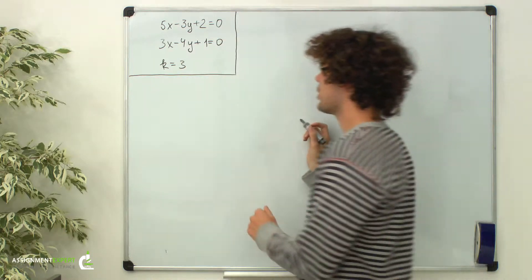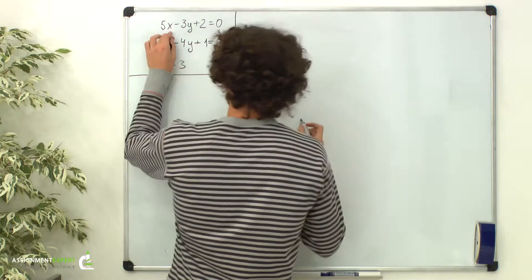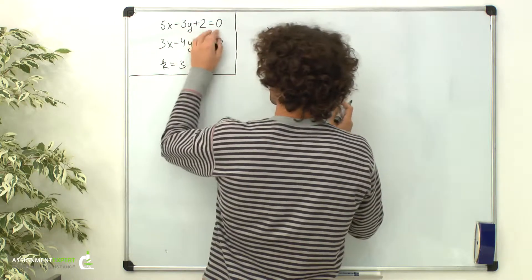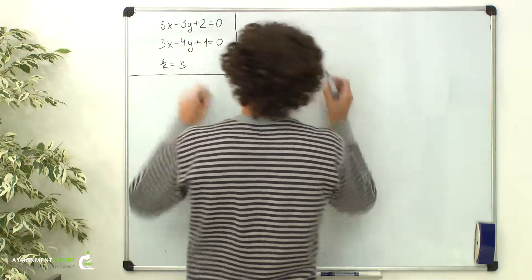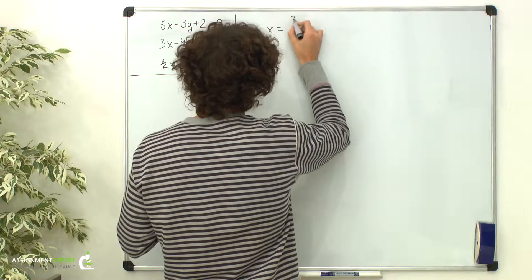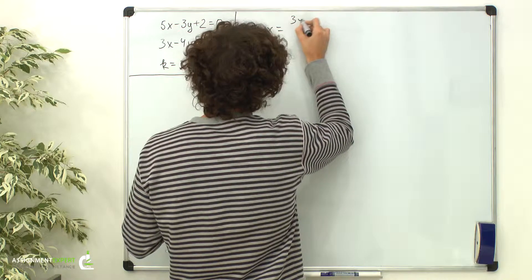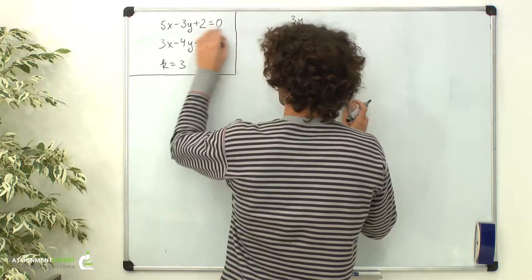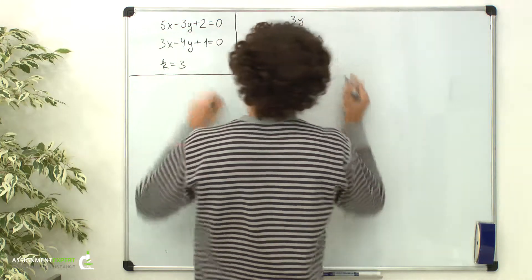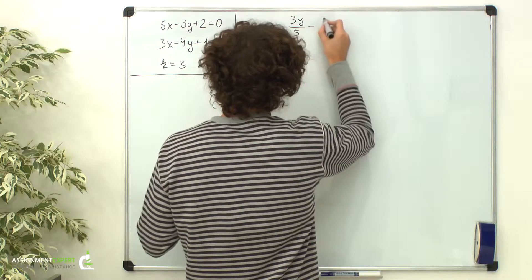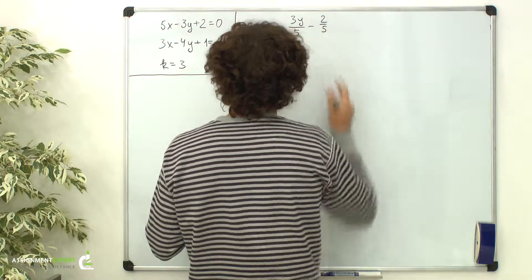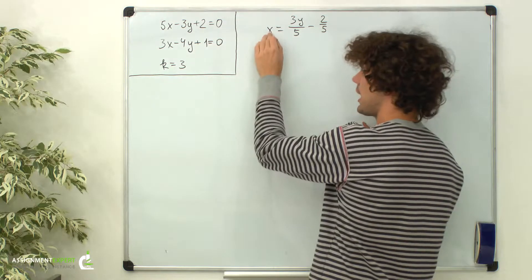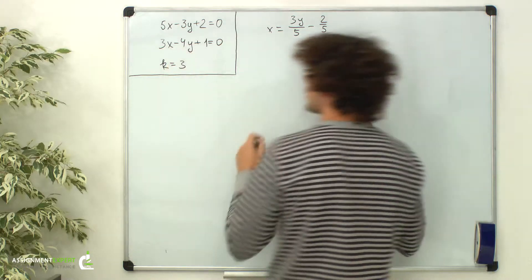From the first equation, we get x equals 3y over 5 minus 2 over 5. And now we can insert x into the second equation.